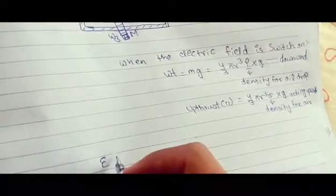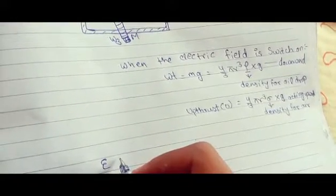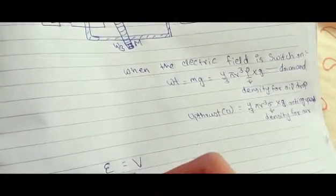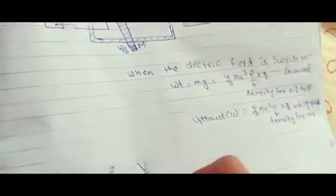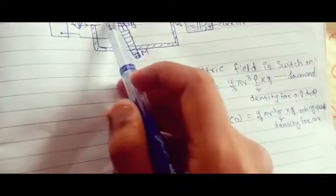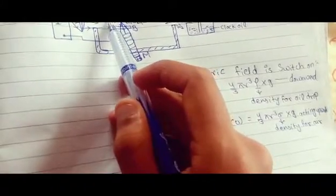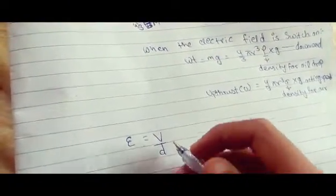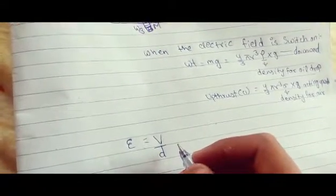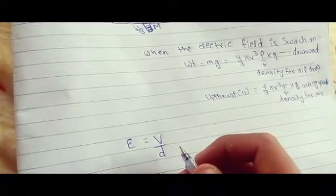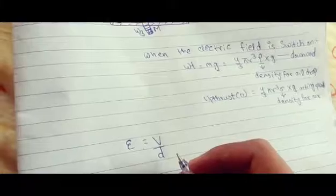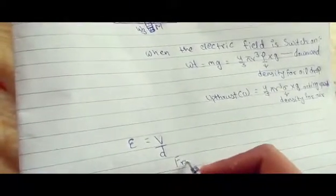The electric field E can be calculated as E equals the potential difference divided by the distance between the two plates. So E = V/D, where V is the potential of the high voltage supply and D is the distance between plates A and B. Since the oil drop moves upward, there exists a net upward force.